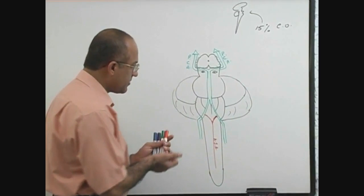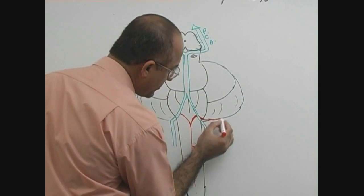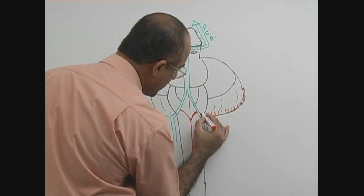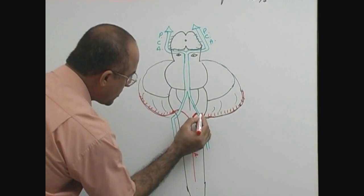After that, other important branch is, from here, another branch. Who will tell me the name of this branch? Posterior inferior cerebellar artery. You know so much, that's good.